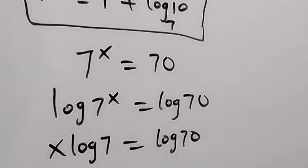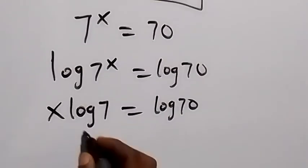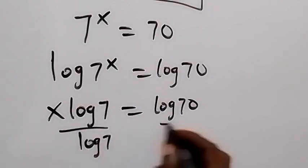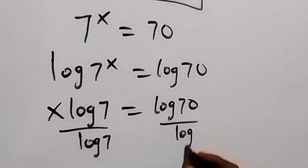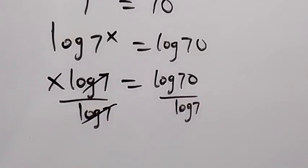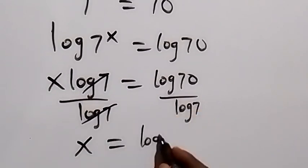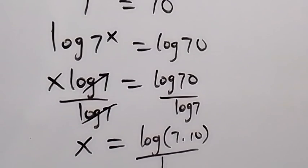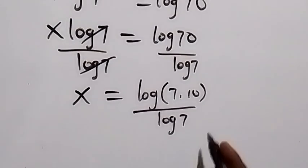Now we can divide both sides by log 7 here. So that we divide this side by log 7 and we divide this side by log 7. So log 7, we cancel log 7 here. And what we have on this side is x equals to log of 7 times 10, over log 7.